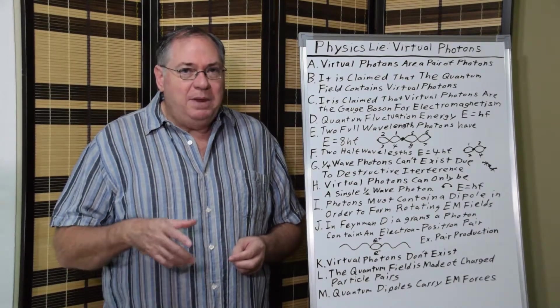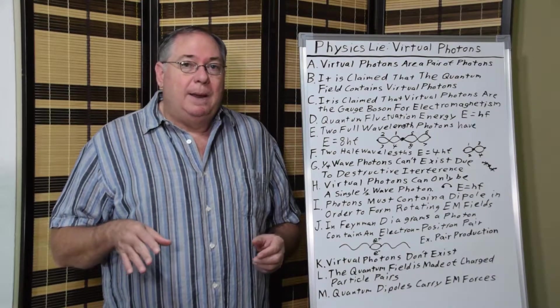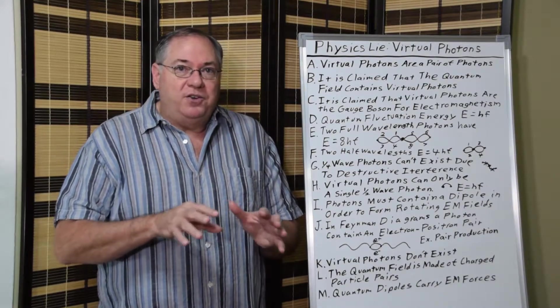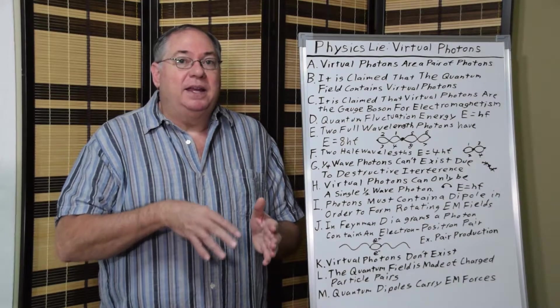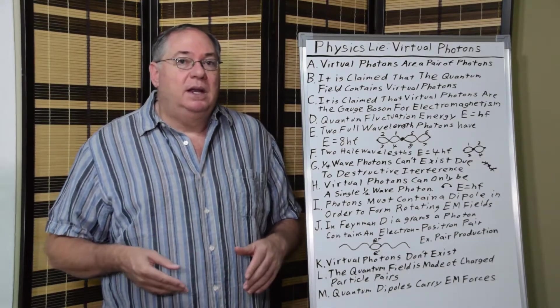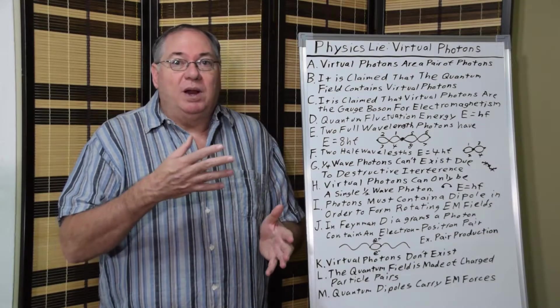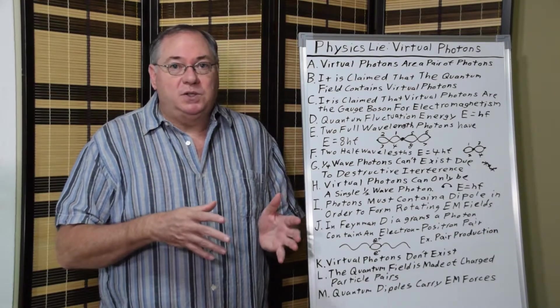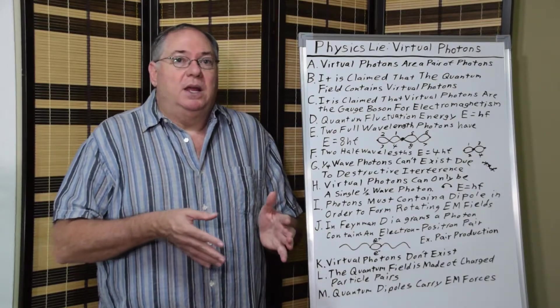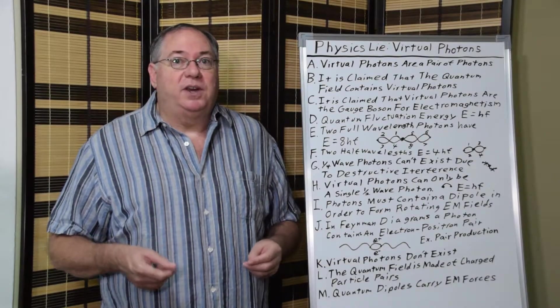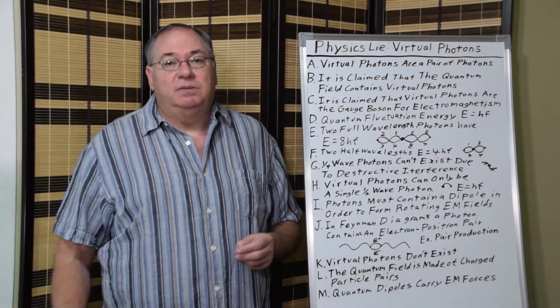It can be E equals HF over 2, when you only consider the energy in the body and not the energy in the quantum field. With photons, we usually consider the quantum field energy too, because when they're produced or absorbed, you have to consider the total energy. So E equals HF for a photon.